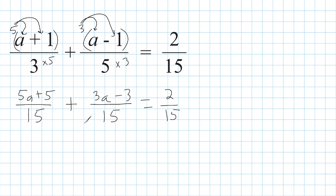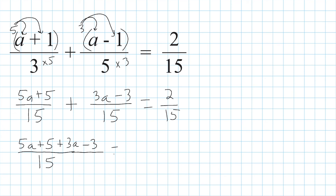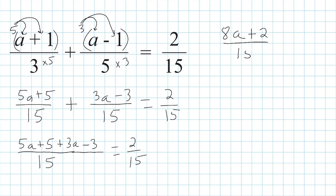Using the distributive property, we multiply 5 times the first numerator giving 5a plus 5, and 3 times the second numerator giving 3a minus 3. That equals 2 fifteenths. Now that we have a common denominator, when adding fractions the denominator stays the same, so we just add our numerators: 5a plus 5 plus 3a minus 3 equals 2 fifteenths. We simplify by combining like terms — 5a plus 3a is 8a, and positive 5 plus negative 3 is plus 2. So we have (8a plus 2) over 15 equals 2 fifteenths.